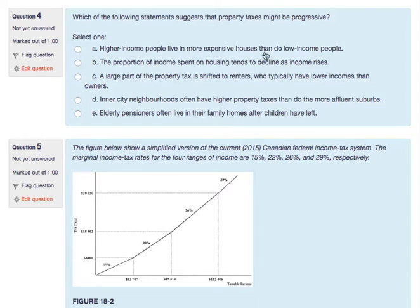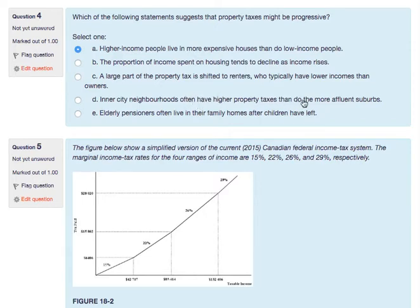Higher-income people live in more expensive houses than low-income people — that explains why property taxes might be seen as progressive, because property taxes are based on the municipal evaluation of your house. If your evaluation is higher, you pay more. The answer that the proportionate income spent on housing declines as income rises would make it more regressive, not progressive. The statement about inner-city neighborhoods having higher taxes doesn't confirm who lives there. And elderly pensioners living in family homes is unrelated to the progressive versus regressive distinction.